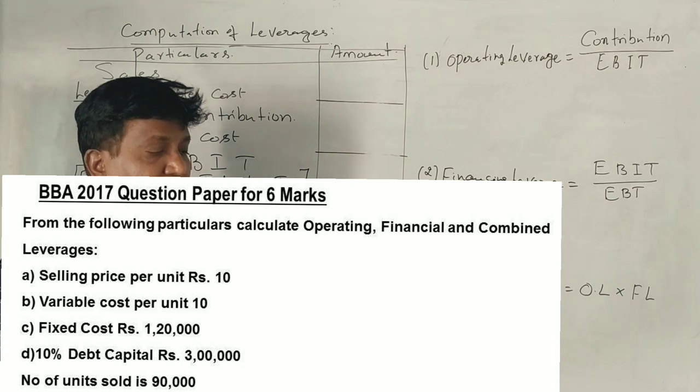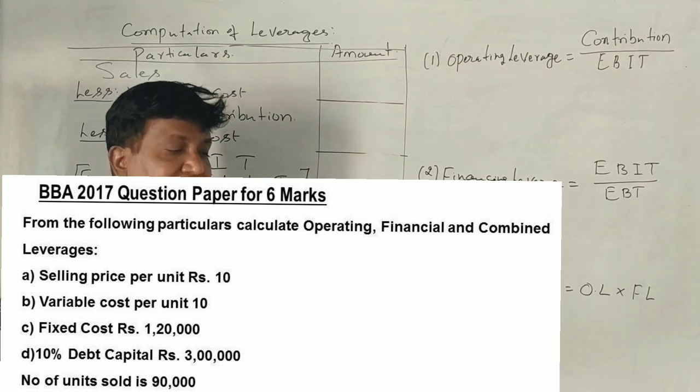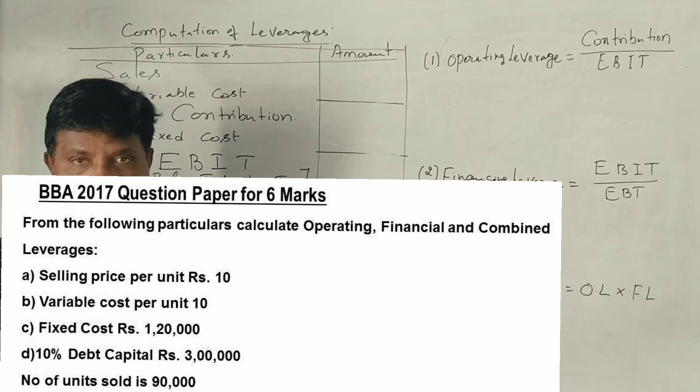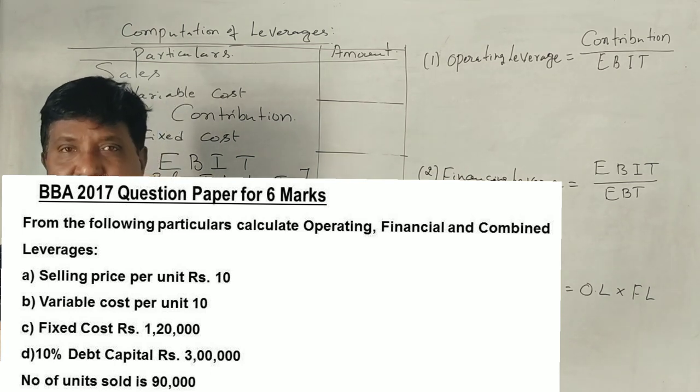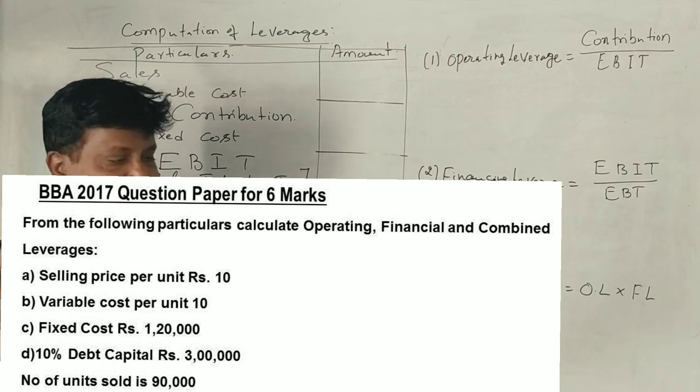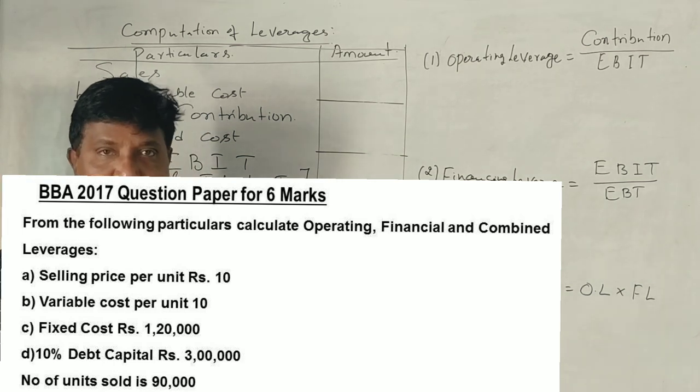Determine the three types of leverage from the following information. Selling price per unit is Rs. 10. Variable cost per unit is Rs. 5. Fixed cost is Rs. 1,20,000. We have 10% debt capital, meaning we have taken a loan of Rs. 3,00,000 for which we pay 10% interest annually. Number of units sold is 90,000 units.